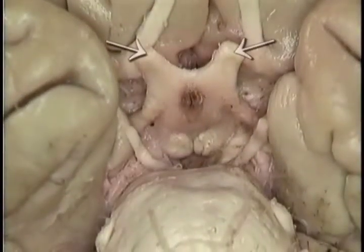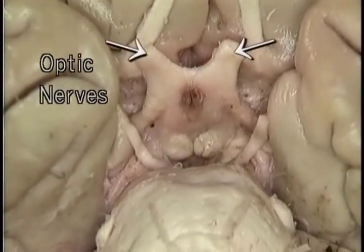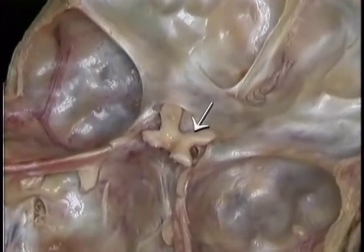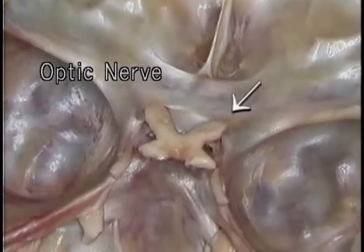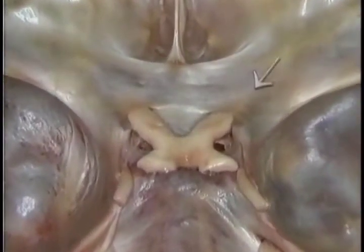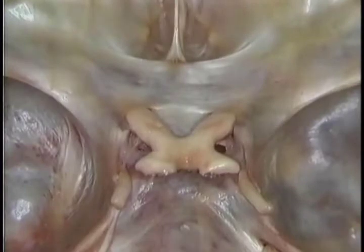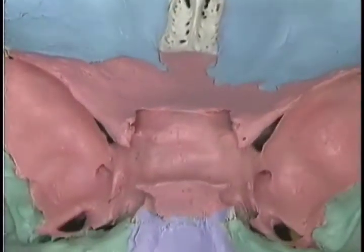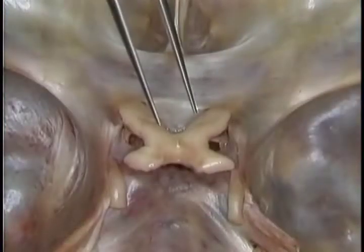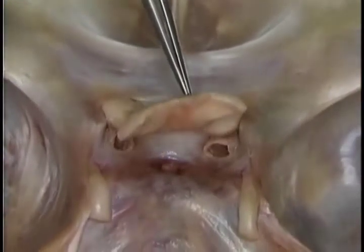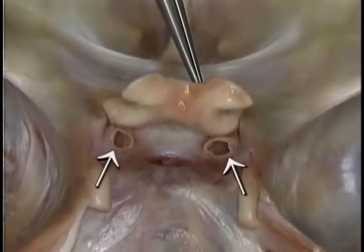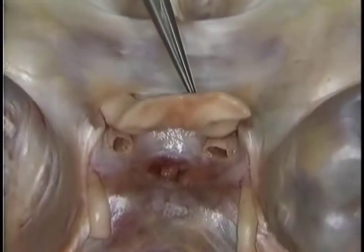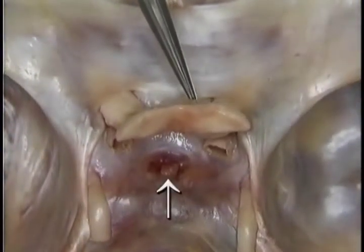We've seen the proximal ends of the optic nerves emerging from the optic chiasm. Here's the optic nerve passing forward beneath the dura to enter the optic canal, which starts here. Here's the optic canal in the dry skull. Here on each side of the optic chiasm are the divided internal carotid arteries. Just beneath the chiasm is the roof of the pituitary fossa. Here's the divided stalk of the pituitary gland.